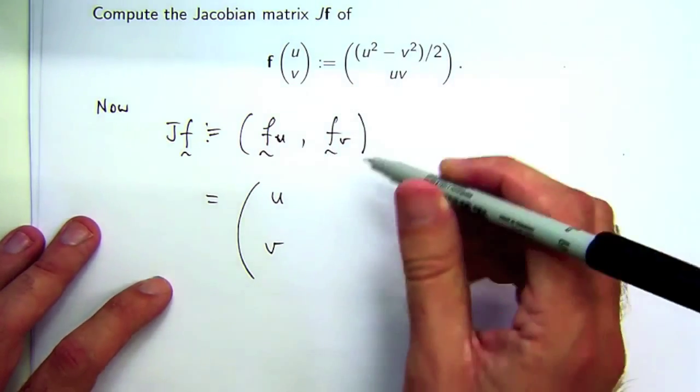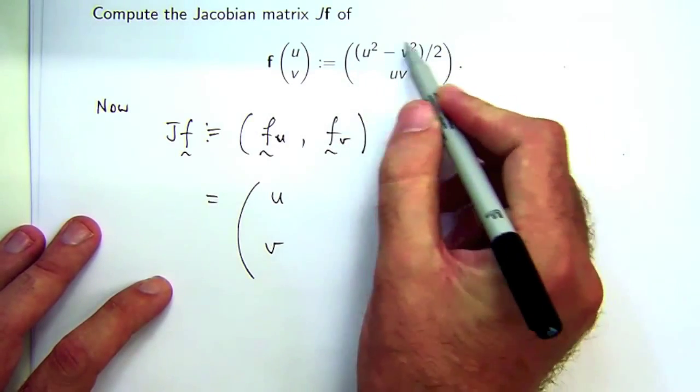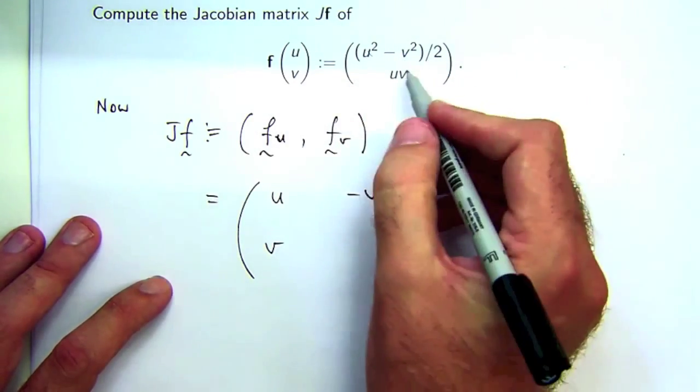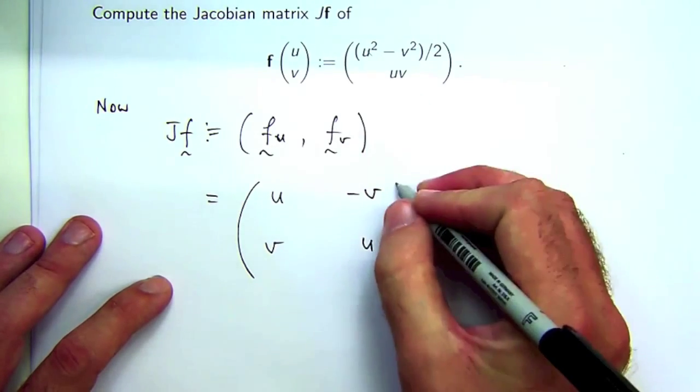Let's go up here, differentiate in a similar fashion with respect to v. This top component's going to give me negative v, and the bottom component's going to give me u.